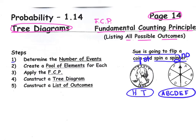Step one: determine the number of events — we have two. Next, step two: create a pool of elements for each event. We did that when we drew our little ovals underneath each object. Step three: apply FCP, or the Fundamental Counting Principle. It states that if you take the elements from the first pool — there are two of them — and multiply them by the number of elements in the second pool — there are six — you get 12. And 12 represents the number of possible outcomes as we flip this coin and spin this spinner.